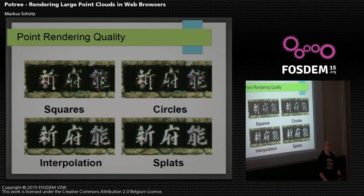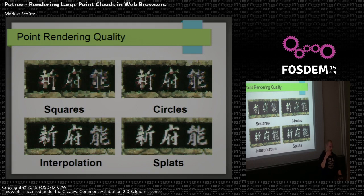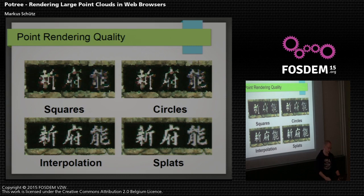With interpolation, if you have multiple points that overlap each other — which happens if you have a higher point size — then not only the nearest points are rendered. Instead, points are chosen with a kind of nearest-neighbor interpolation, and this considerably improves readability of fine details like text in point clouds. Splats is very similar, except that it does not choose one point — it blends all overlapping points together.